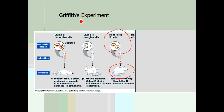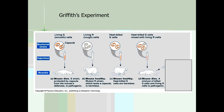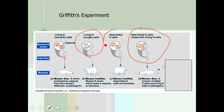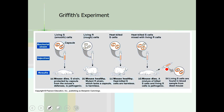The last experimental group of mice were injected with a mixture — living R cells, which are not deadly, and heat-killed S cells, which are not deadly. And yet the mice died. That was a surprise. An even bigger surprise: when those mice died, he took a blood sample from the dead mice and found living S cells — the living, deadly bacteria. The question was, where did they come from? He did not inject living S cells into these mice.